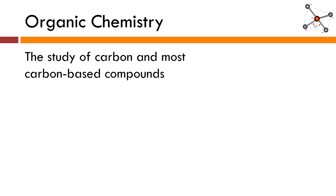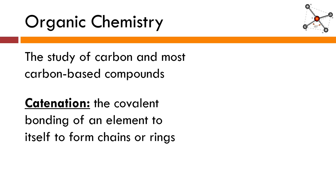You might be wondering how it's possible that we're just going to look at carbon. Carbon is really unique as it's able to undergo something called catenation. Catenation is the covalent bonding of an element to itself to form chains and rings. This is something that other elements don't readily do. If you think back to the bonding unit, we know that carbon has four unshared electrons in its valence shell, and therefore it wants to form four bonds.